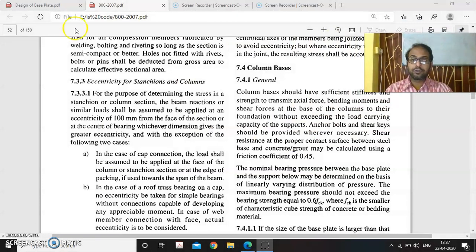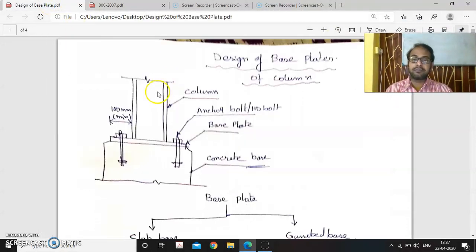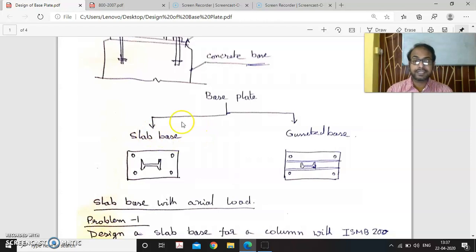Hello students, today we will discuss the design of base plates. We have a base plate which is a structural member that connects the column with the foundation below, which is made of concrete. We provide anchor bolts or holding down bolts to connect the column with the foundation with the help of this base plate. We have two types of base plates: one is slab base and another is gusseted base.